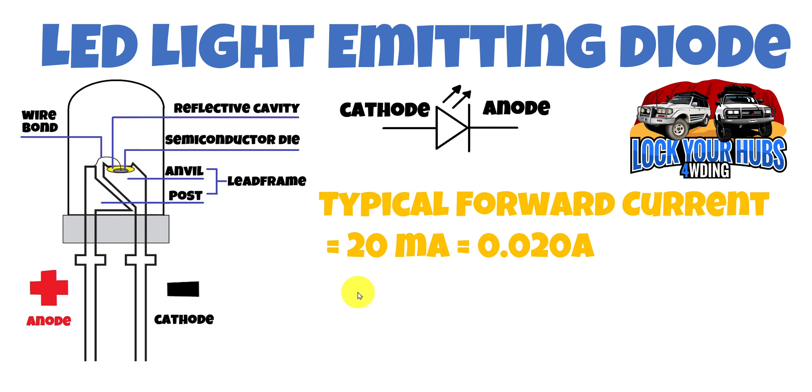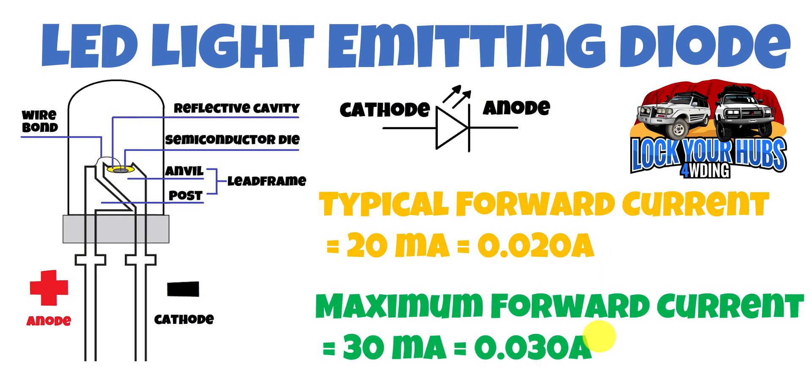Now the typical forward current that's required for this particular LED to operate is around about 20 milliamps or 0.020 amps. And the maximum forward current for it operate is 30 milliamps or 0.030 amps. Now we know that we can use what's called Ohm's law to work out the correct resistor for the voltage that we're using.